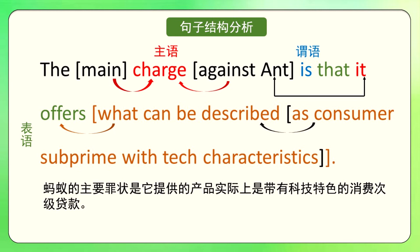所以这句句子的意思就是：针对蚂蚁的最主要的罪状，是它提供了一个可以被描述为consumer subprime with tech characteristics的东西，就是带有科技特色的消费次贷。